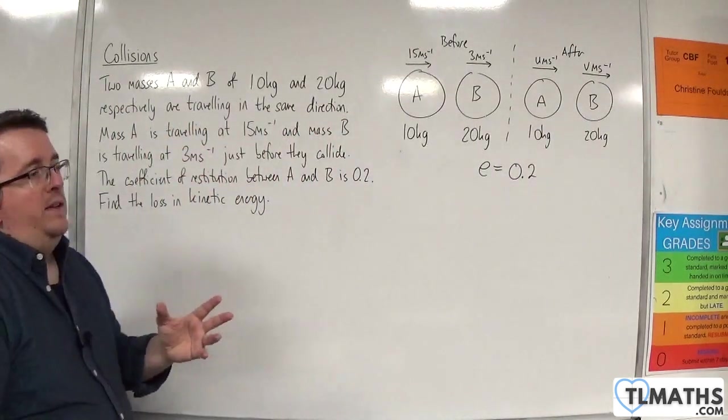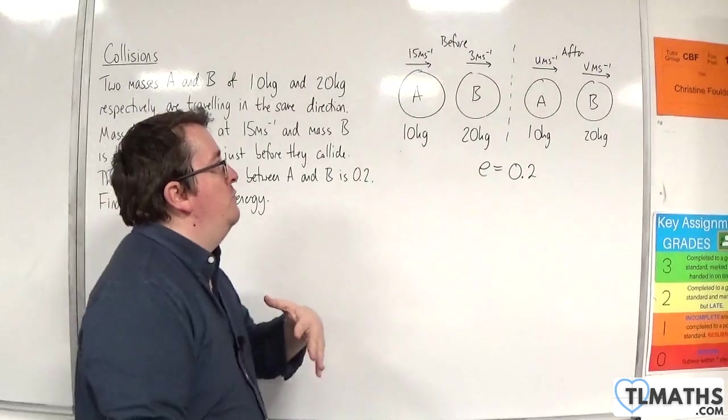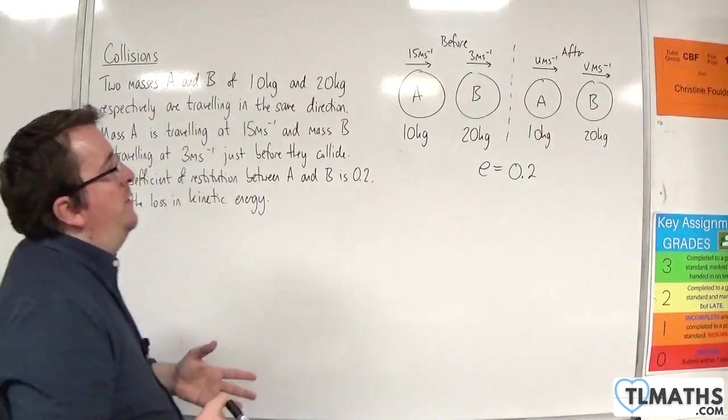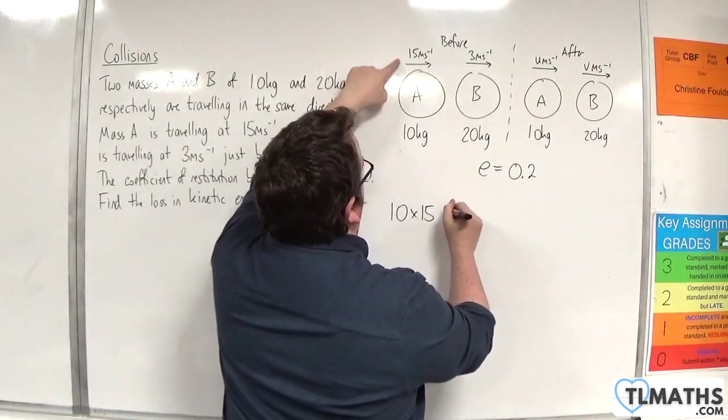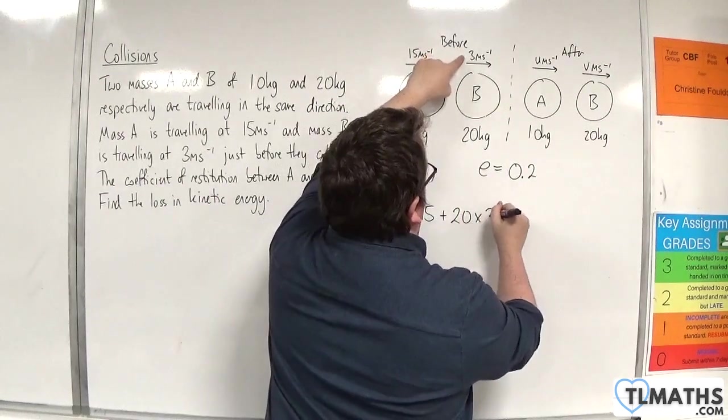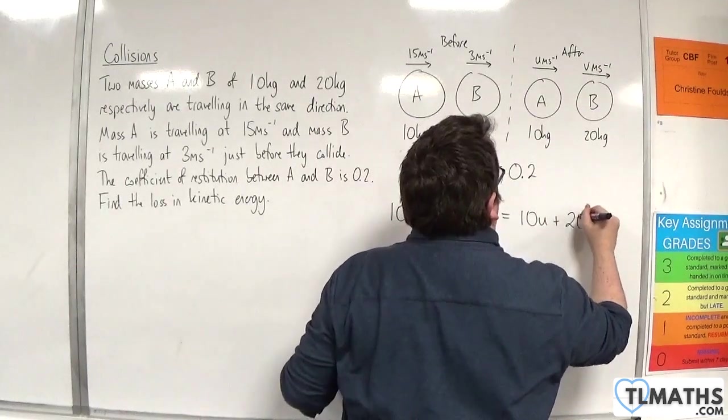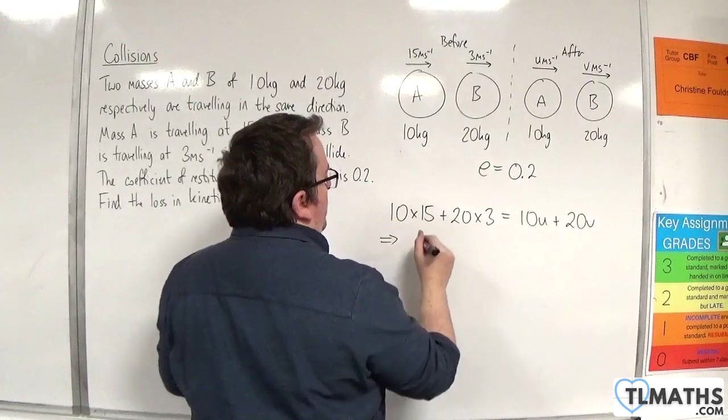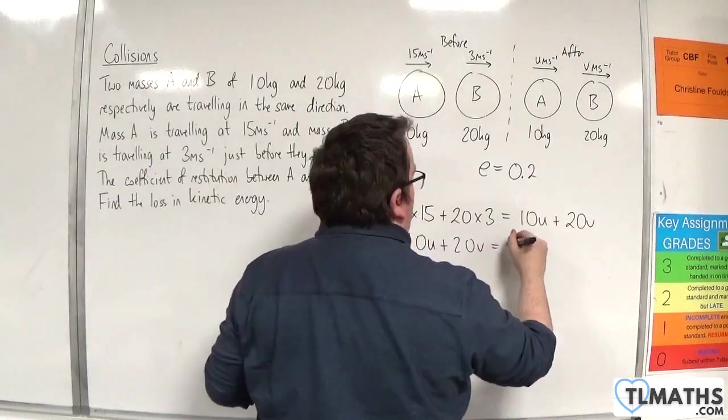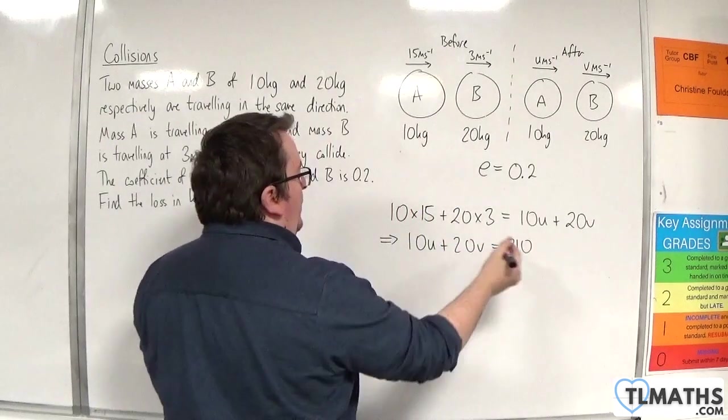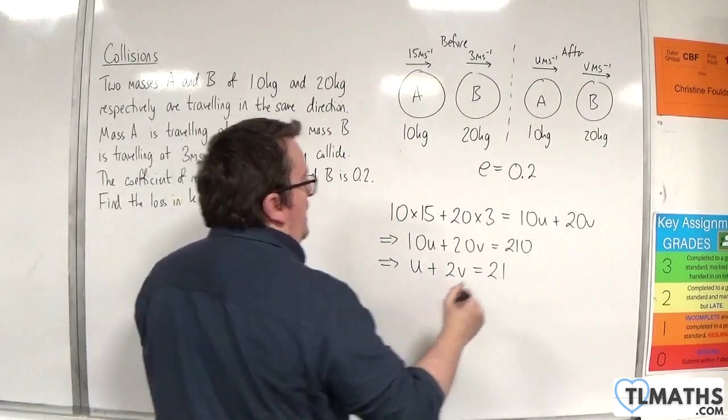So just as we did in the previous video, we will utilize the conservation of linear momentum and the calculation for the coefficient of restitution. So the conservation of linear momentum first, that would be 10 times 15 plus 20 times 3, and that's going to be equal to 10U plus 20V. So we'll have 10U plus 20V is equal to 150 plus 60, so 210. Now we can simplify that, divide through by 10, so U plus 2V equals 21. And that will be my first equation.